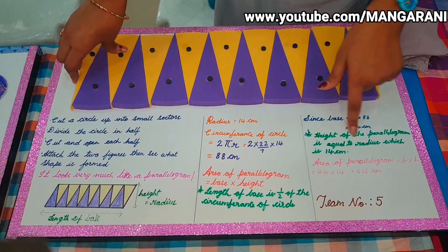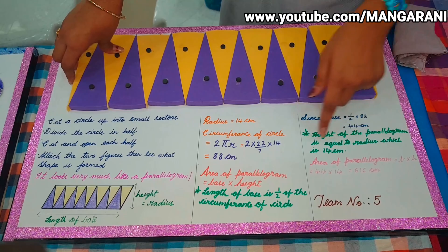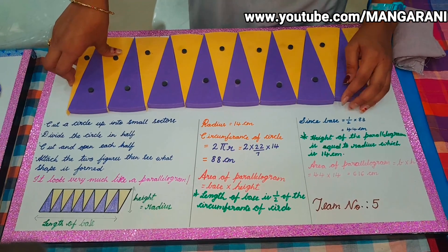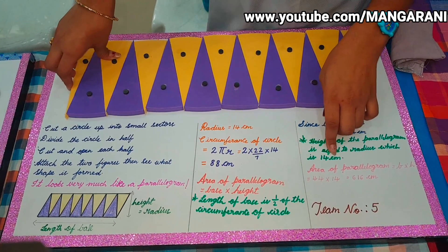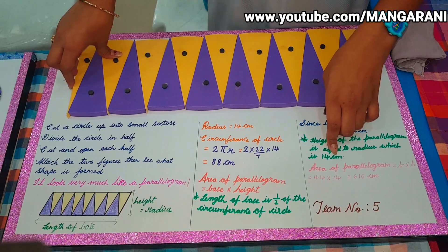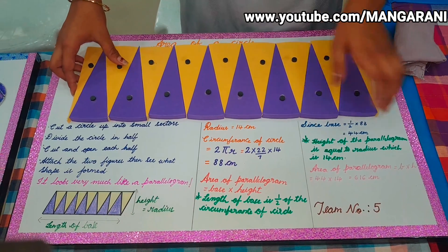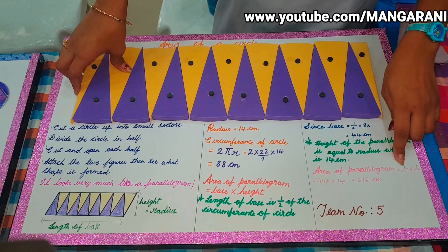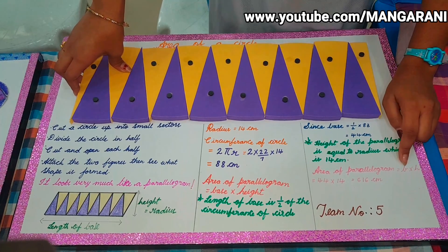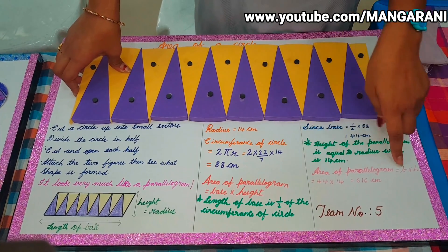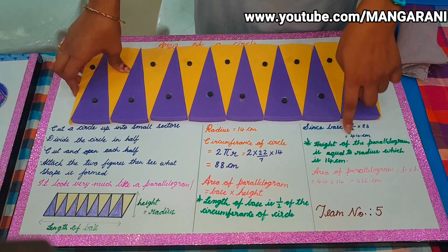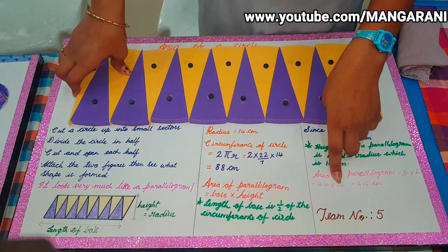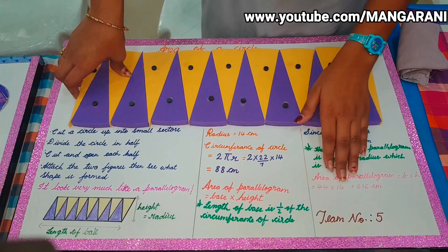Step 3: The height of the parallelogram is equal to the radius of the circle, which is 14 cm. The last step to find the area of the circle: the area of the parallelogram is equal to base into height. Base is 44 cm and height is 14 cm.